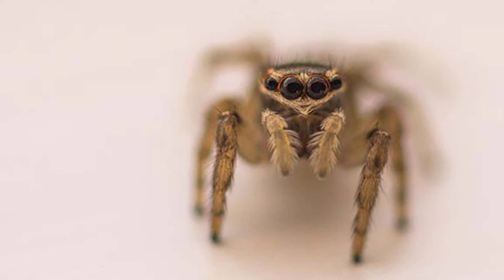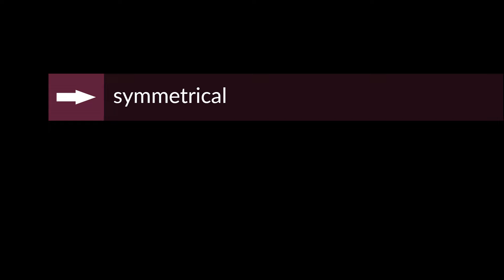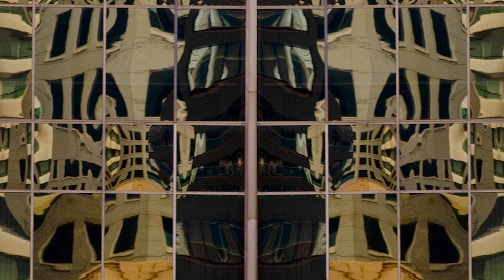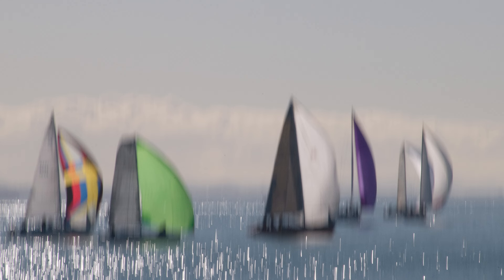First up, we have balance. Just like a tightrope walker maintains balance, your photograph needs equilibrium too. There are two main types of balance: symmetrical and asymmetrical. Symmetry involves a mirror-like arrangement of elements, creating a sense of order and perfection. Asymmetry is all about distributing visual elements without strict mirroring — it's dynamic, modern, and allows for creativity. Think of it as a dance of elements that keeps your viewer engaged.